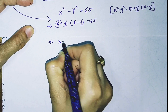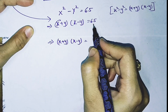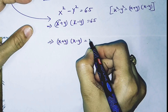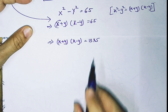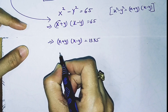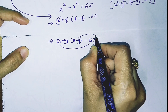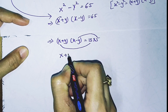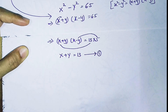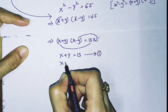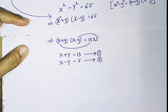Now I write 65 as 13 times 5, since 13 × 5 = 65. This gives us two equations: x + y = 13 (equation 1) and x − y = 5 (equation 2).